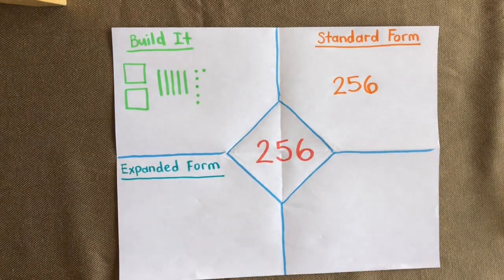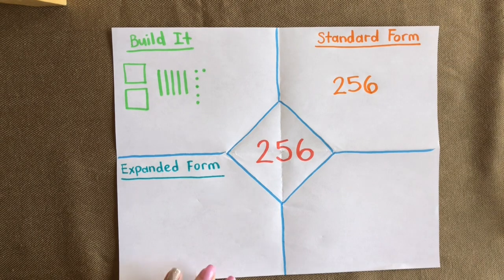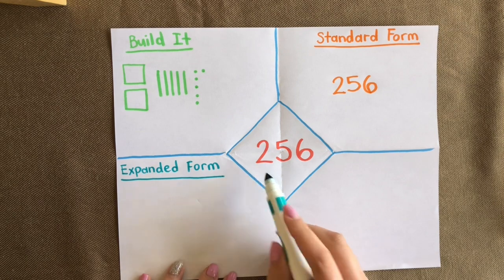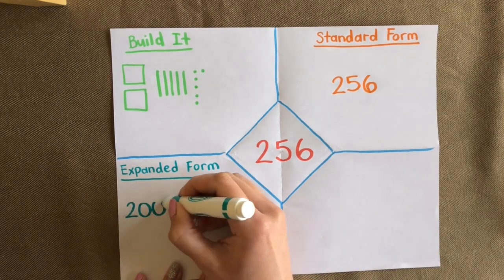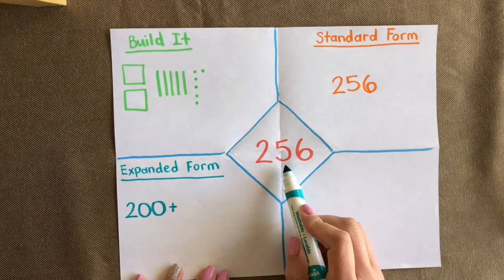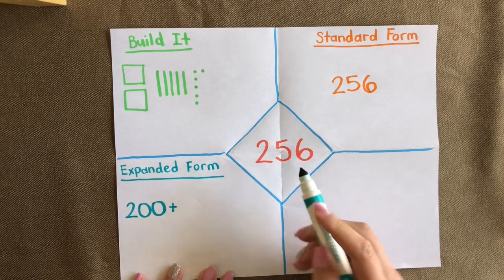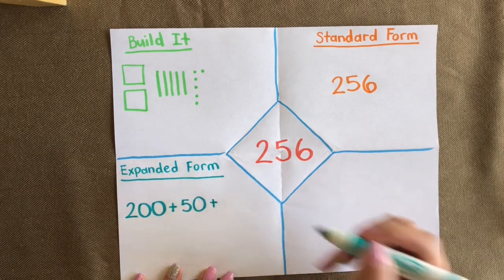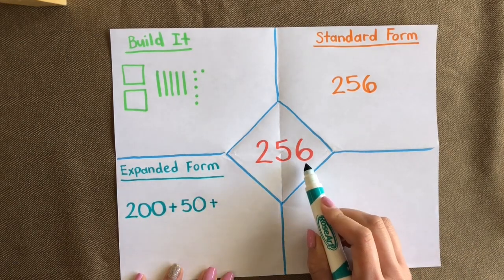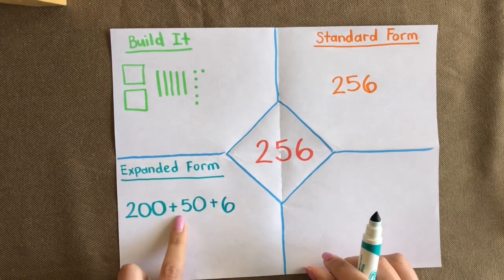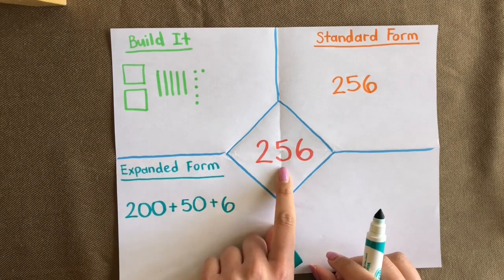Expanded form is when we pull apart each digit and write the value of each digit as an addition equation. Starting with 256: the two is not just a two — it's actually 200. Then we add the tens digit, which is not just a five but actually 50. And lastly our ones place: six ones is just six. So 200 plus 50 plus 6 equals 256.